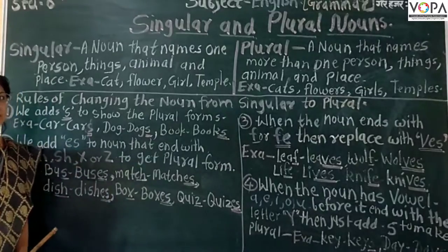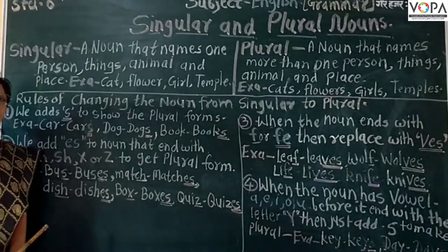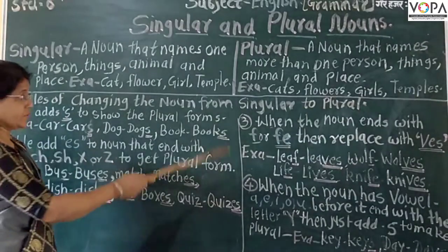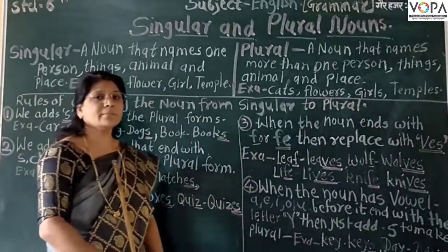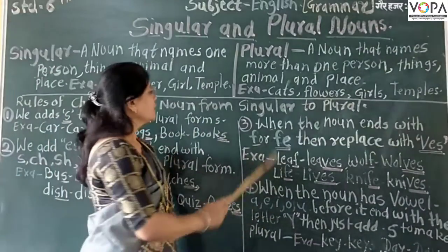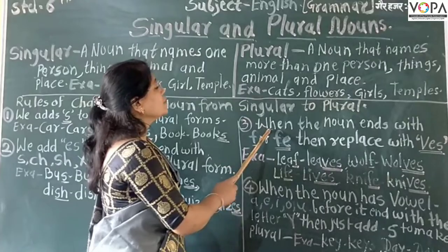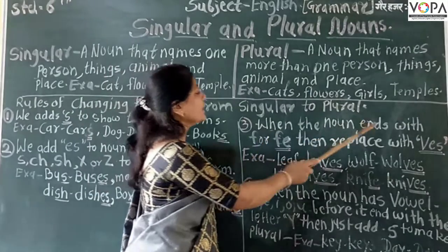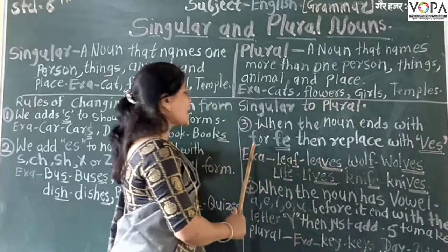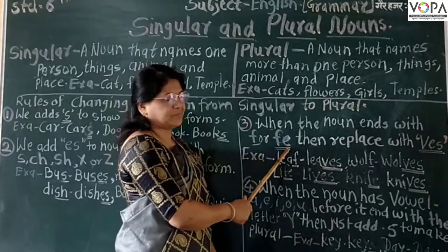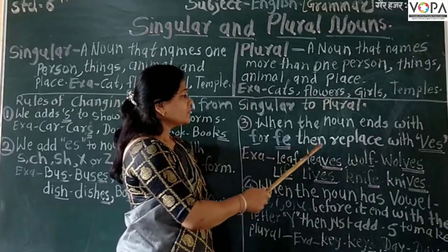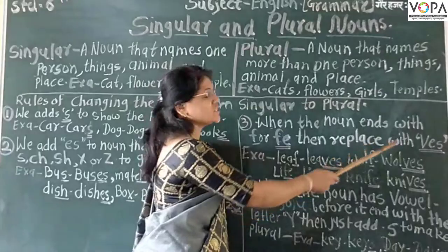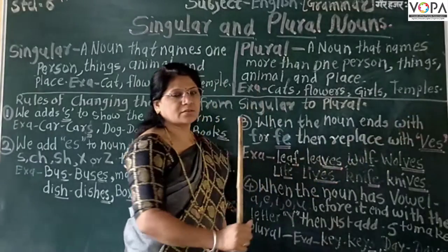Now rule number 3. What is rule number 3? When the noun ends with F or FE, then replace F or FE with V-E-S.